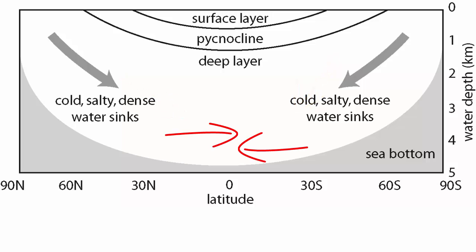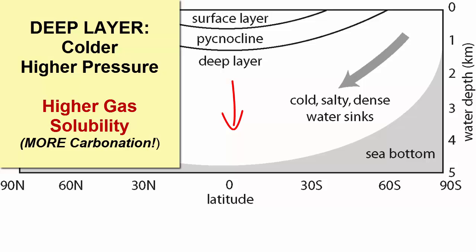Note pycnocline is a term used to describe the boundary between two different density water masses. So when we descend deep in the ocean at the equator, tropics, or mid-latitudes, the temperature should get colder. Of course, the pressure of the overlying water also increases quite substantially. Both of these things we know to increase gas solubility and hence allow for greater carbonation.